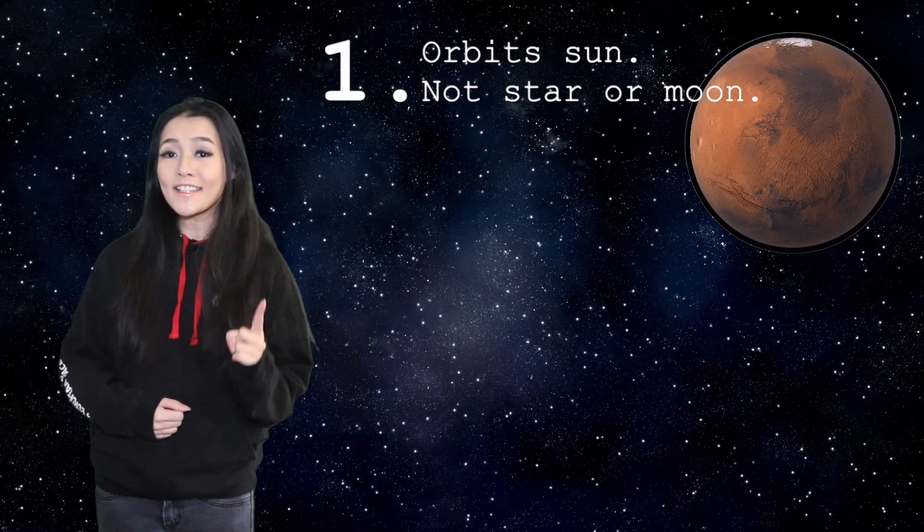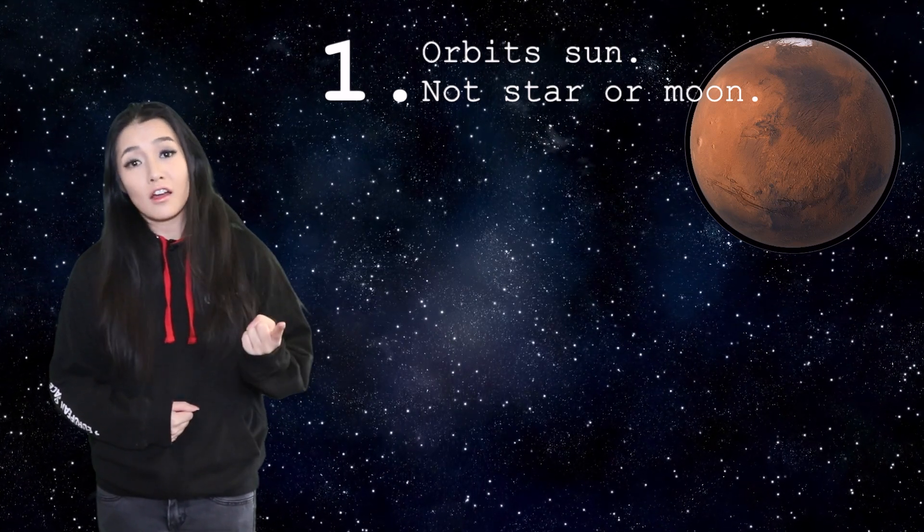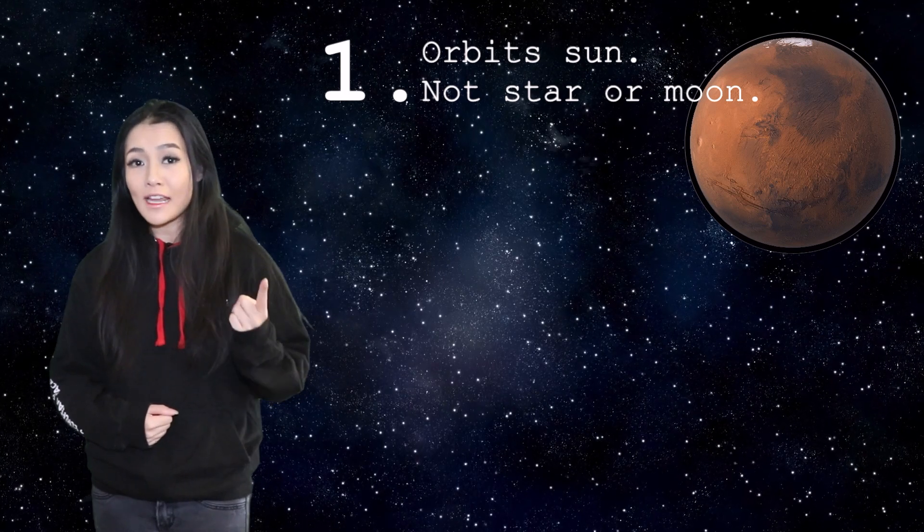According to the International Astronomical Union, a planet within our own solar system is defined as any celestial body which firstly is in orbit around the Sun, and it's neither a star nor a satellite around a planet.